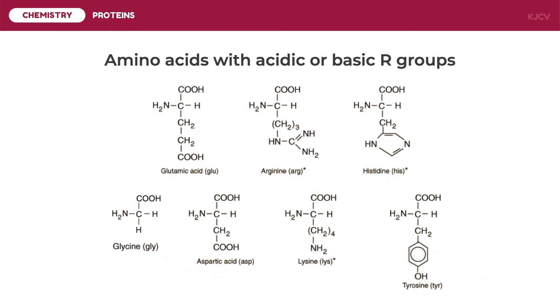And lastly, there are amino acids with acidic or basic R groups: these are glutamic acid, arginine, histidine, glycine, aspartic acid, lysine, and tyrosine.